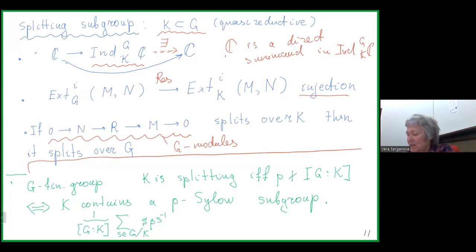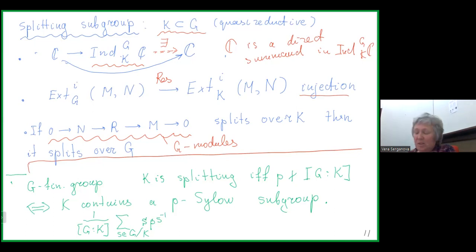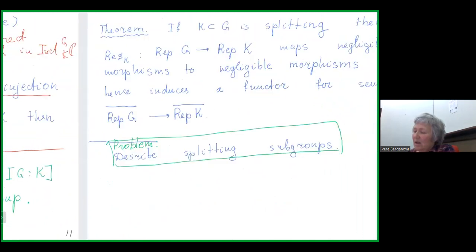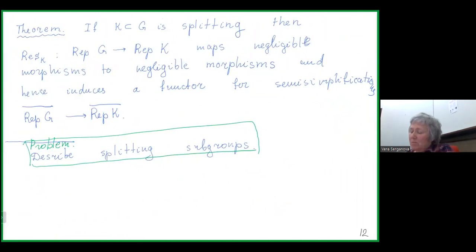Here is an example: suppose G is a finite group. Then K is a splitting subgroup if and only if its index is not divisible by p — equivalently, K contains a Sylow subgroup. Indeed, the splitting is constructed by averaging over left cosets of G mod K. An important consequence: if we have a splitting subgroup, then the restriction functor maps negligible morphisms to negligible morphisms, and hence we have a functor between semi-simplifications.